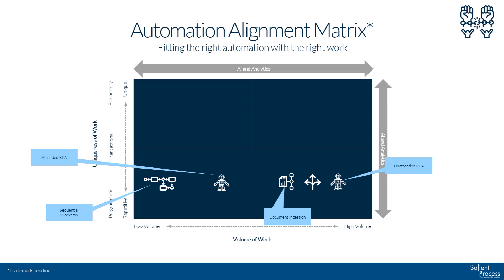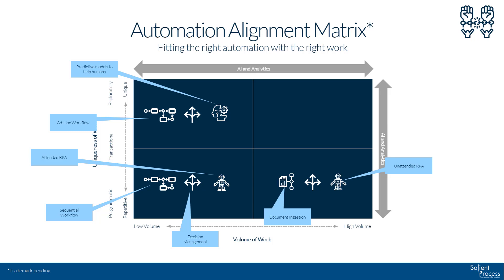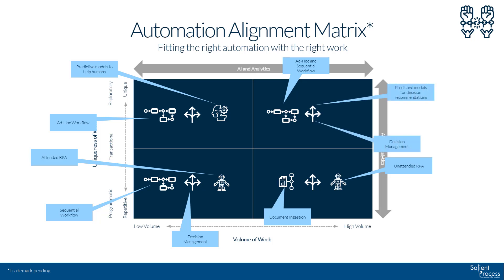As we move into the upper left-hand corner of the matrix, we're into the realm of unique exploratory low volume work. Bots have minimal, if any, presence here. This is the realm of research, strategy, and other efforts requiring diligent thought and long efforts. An example at our company is quarterly planning — while we may be able to build a process to define the steps we need to take every quarter, a bot will not be able to analyze the market and make strategic decisions. However, our analysis could be augmented by data science and machine learning to make our decisions less biased. Lastly, in the upper right-hand corner, we have high volume and unique work — this is where ad-hoc and sequential workflow thrive. You'll want to strongly consider leveraging IBPMS technology to orchestrate your processes, while also leveraging a DMS to collect and automate decisions.